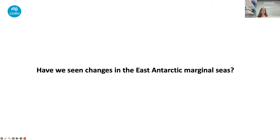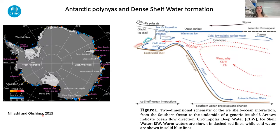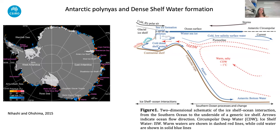Our next question was: have we actually seen changes in the East Antarctic marginal seas that we can link to changes in the properties of the circumpolar deep water on the slope? I'm now taking you to processes that occur in the continental margins of East Antarctica. Here I'm showing a map of coastal polynyas — the polynya areas and where we have fast ice. On the right side of the slide, another way of representing where the water masses are and the key processes, linking the Southern Ocean with the continental margins and water mass transformation.